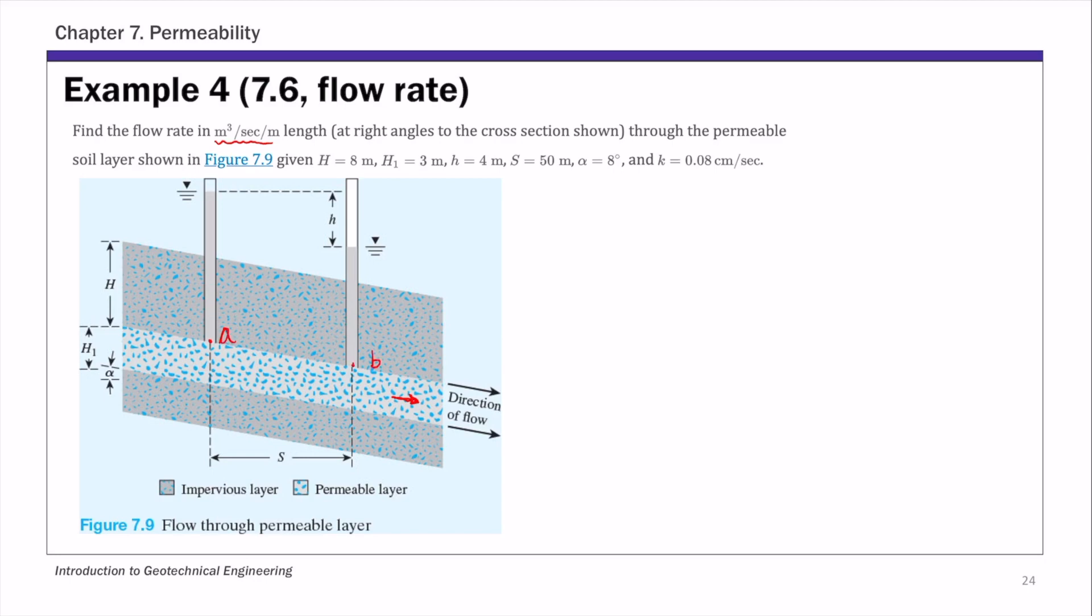So from point A to point B, we are given this head loss, small h, 4 meters. And we also know the height of this permeable soil layer, H1. So that's 3 meters. And then we're going to estimate this flow rate Q.